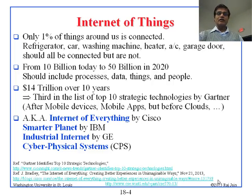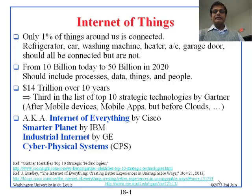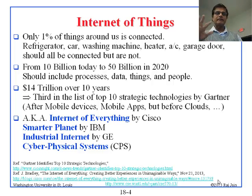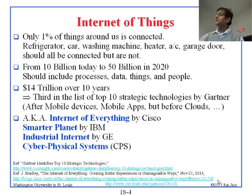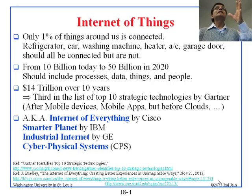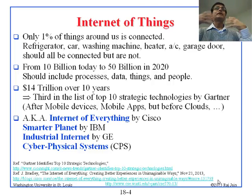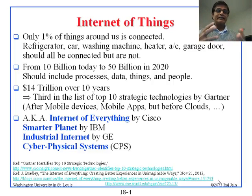That includes your refrigerator, car, washing machine, heater, air conditioner, garage door. Many of these are already connected — for example, your thermostat. From 10 billion devices today to 50 billion in 2020 — that's a projection — including processes, data, things, and people. For example, 14 trillion dollars over 10 years. This is coming from Cisco. This is the whole thing which people using machine-to-machine communications — such as GE or hospitals with medical devices — will drive. This is a 14 trillion dollar industry for connecting things to the internet.